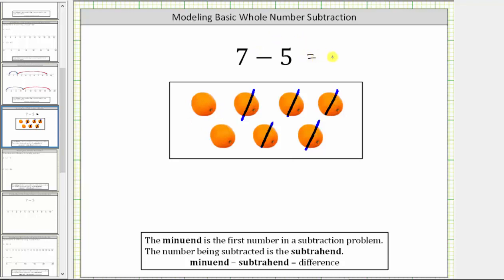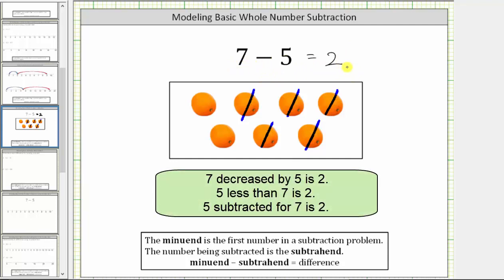7 minus 5 equals 2. We can also interpret subtraction equations in several other ways. We can interpret this as 7 decreased by 5 is 2, or 5 less than 7 is 2, as well as 5 subtracted from 7 is 2.